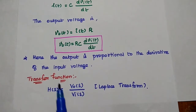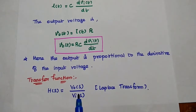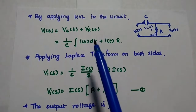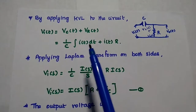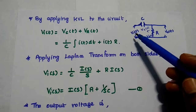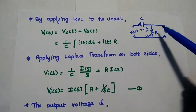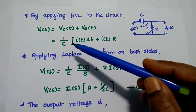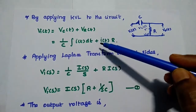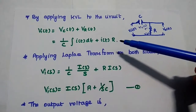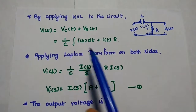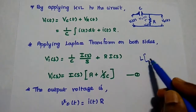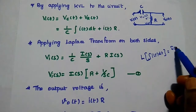Next, we are going to find out the transfer function. The transfer function is the ratio of the Laplace transform of the output voltage to the Laplace transform of the input voltage. We are going to find out these Laplace transforms by applying KVL to this differentiator circuit. So Vi of T is equal to the voltage drop across the capacitance plus the voltage drop across the resistance, that is Vc of T plus Vr of T. The capacitor voltage is equal to 1 by C times the integration of I of T into dt, plus the voltage drop across the resistance equal to I of T into R. Then we apply Laplace transform on both sides. We get Vi of S equal to 1 by C times I of S by S.